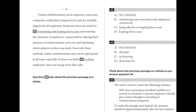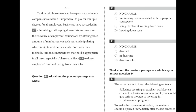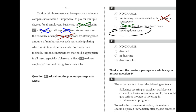Number forty-two is a redundancy problem, and each choice is redundant in a different way. One has 'minimizing' and 'keeping down.' Another repeats 'employees' coursework' twice. Another has 'being effective' and 'have succeeded.' The only one lacking redundancy is choice D.